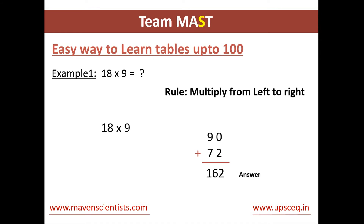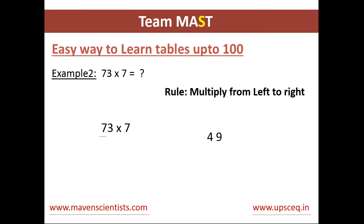Let's see this with another example: 73 into 7. We will start again with the rule — multiply from left to right. We will multiply 7 into 7 which gives us 49, and next we will write a 0 next to this number like we did before. After this we will multiply 7 into 3 which gives us 21. Now we just add these two numbers which gives us 511, which is the answer for 73 into 7.